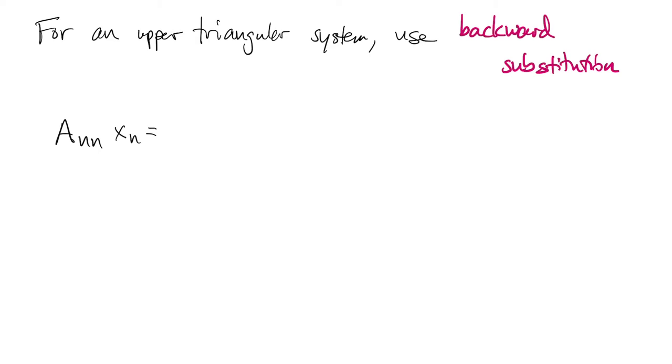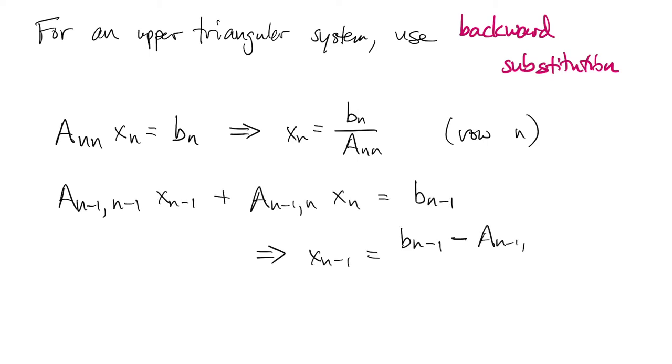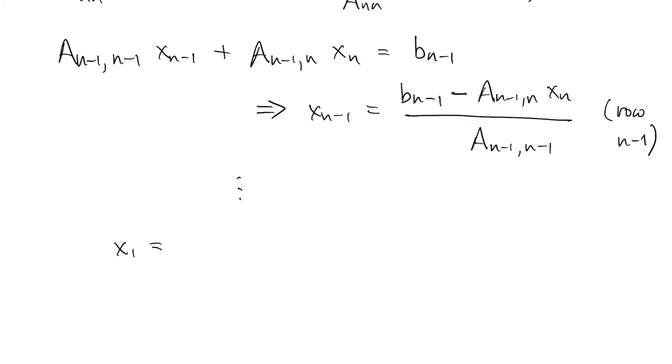So the last row we can solve for xn right away. And then the next row only involves variables xn minus 1 and xn, so we can solve for xn minus 1, and so on. We can keep working our way all the way up to the first row.